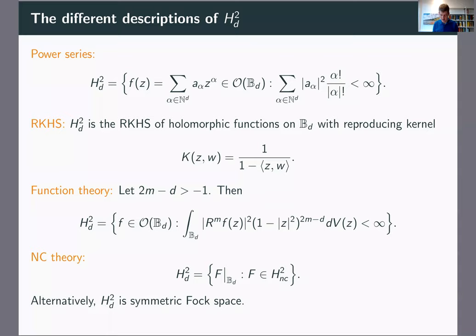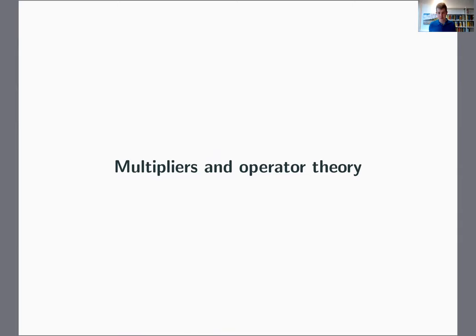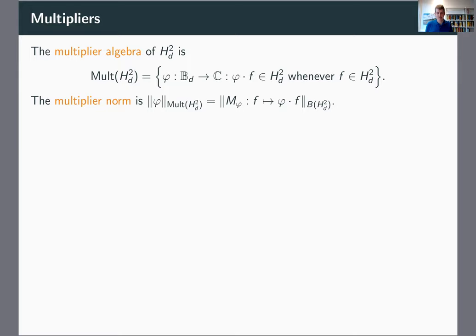What I want to talk about today are multipliers and how they relate to operator theory. The multiplier algebra of the Drury-Arveson space consists of all functions on the unit ball that leave the Drury-Arveson space invariant under multiplication. The Drury-Arveson space itself is not an algebra, just like H2 is not an algebra, but the multiplier algebra is. By the closed graph theorem, every multiplier gives you a bounded multiplication operator, and this defines the multiplier norm — you take the operator norm of the multiplication operator.